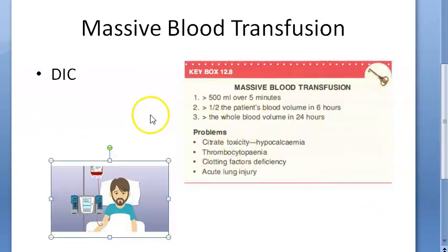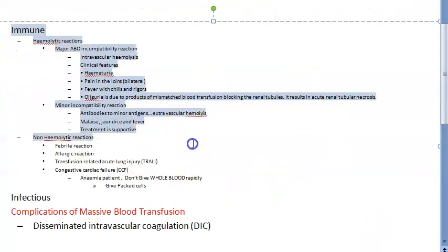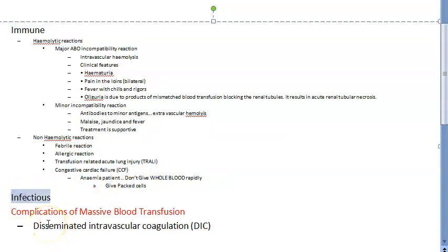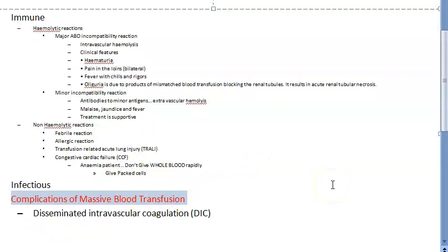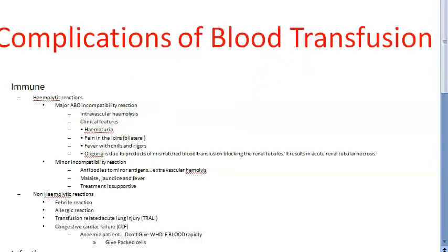To treat disseminated intravascular coagulation, give fibrinogen with other clotting factors because these people have afibrinogenemia. So we are done with the complications of blood transfusion: immune - hemolytic and non-hemolytic (febrile, allergic, TRALI, congestive cardiac failure); infectious - HIV, malaria, syphilis, hepatitis B; and complications from massive blood transfusion including hypocalcemia, reduced clotting factors, DIC, acute lung injury, and thrombocytopenia.